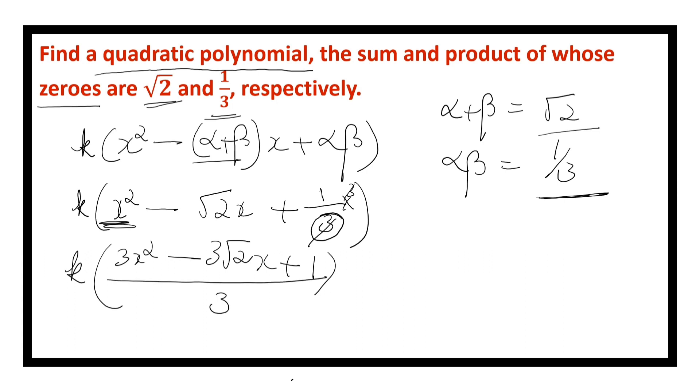This 1 by 3 we can put instead of k, which is a real number and it is a constant, into 3x square minus 3 root 2x plus 1.